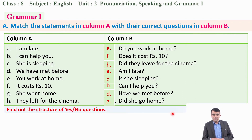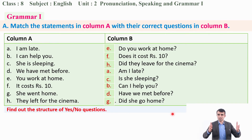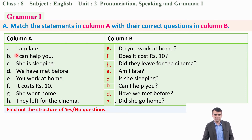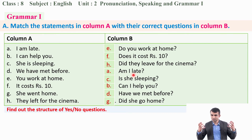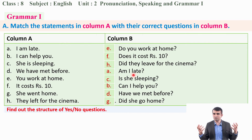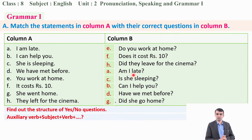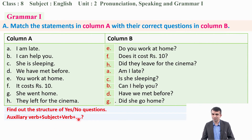Now find out the structure of yes/no questions. They are yes/no questions — you can answer with yes or no. What is the structure? How are they changed? In 'I am late' and 'Am I late?' — the auxiliary verb comes first, then the subject, then the main verb. The auxiliary verb and subject swap positions.